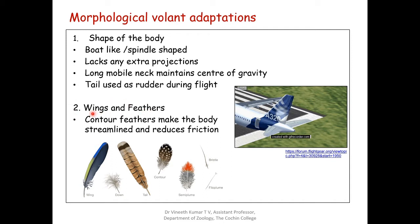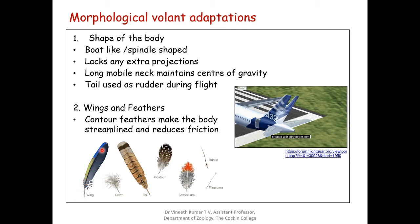Coming to the second morphological adaptation — wings and feathers. This diagram depicts the different types of feathers that birds usually have. In the tail as well as in the wings, there are special feathers usually referred to as quill feathers. Quill feathers have a vein-like structure, and they are seen on the tails as well as in the wings.